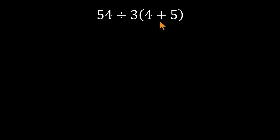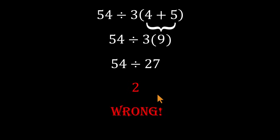They start by handling the parentheses. 4 plus 5 equals 9. Then they multiply that 9 by the 3, getting 27. And finally, they do 54 divided by 27 and proudly announce the answer is 2. It looks neat. It feels sensible. But it isn't correct.